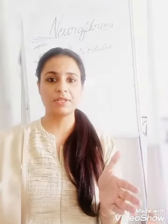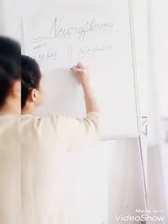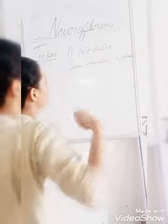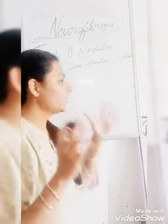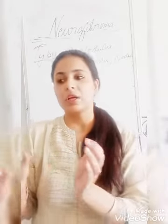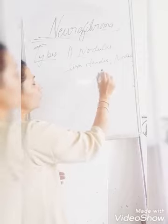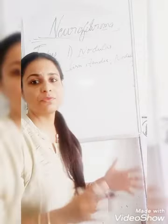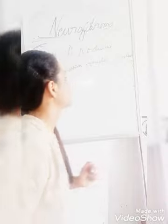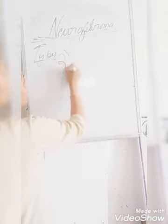First, let's take nodular neurofibroma. In nodular neurofibroma there will be a single nodule presentation. You will notice a single firm, tender nodule or tumor. The very important point to remember is that in general features the swelling moves in the direction of the nerve fibers, but here in nodular neurofibroma this nodule moves not in the direction of nerve fibers but horizontally or perpendicular to the nerve fibers. There will also be a tingling numbness sensation.